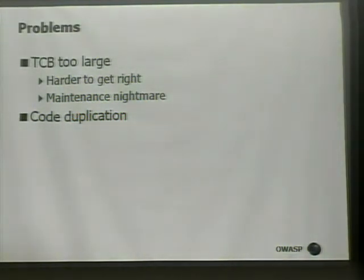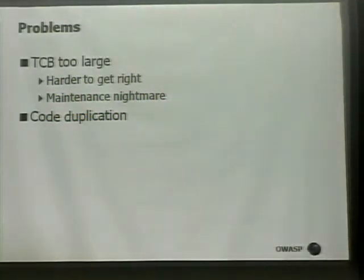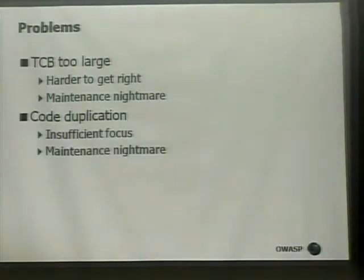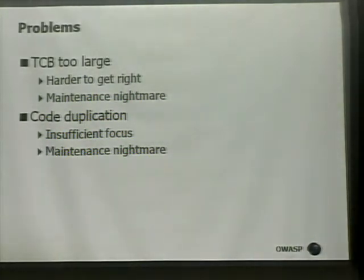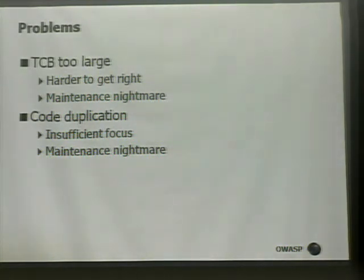Even if you convince yourself once that it's correct, each time you make a change to the system you have to go through the whole exercise again — that's why you want a small TCB. The second problem is code duplication. Code duplication breaks the separation of concerns and creates a maintenance nightmare, because invariably your business logic will change due to different regulations or different financial instruments coming onto the market.